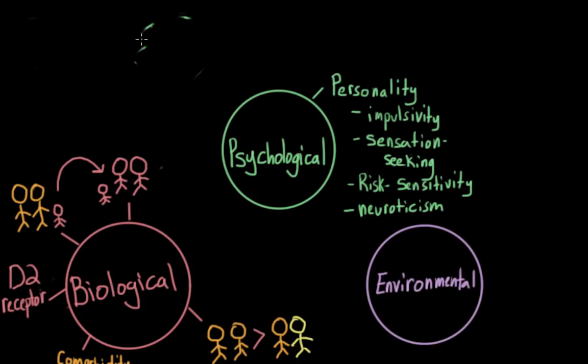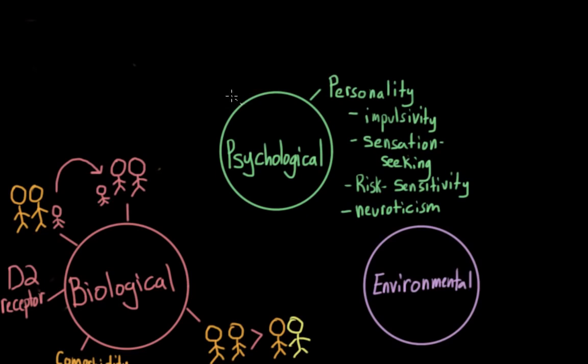There are other psychological factors that can play a role that aren't personality traits. For example, we also know that individuals who tend to score high on aggression tests, so individuals who have feelings of aggression and aggressive behaviors, who also tend to act out at school or at home, they also seem to be at a higher risk of developing addiction later in life.